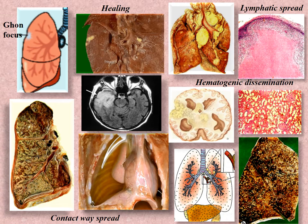Lymphatic spread: the process spreads from previously affected local hilar nodes to other groups of lymph nodes — tracheobranchial, bifurcation, mediastinal, axillary, and neck lymph nodes. Pressure of enlarged nodes on bronchi with obstruction may lead to collapse, retention of secretion, and inflammatory consolidation, defined as bronchoadenitis.